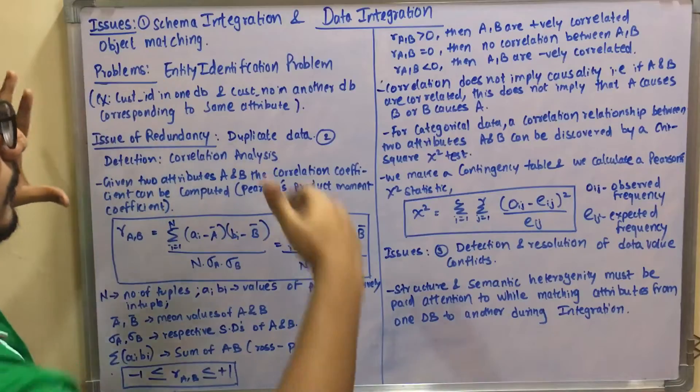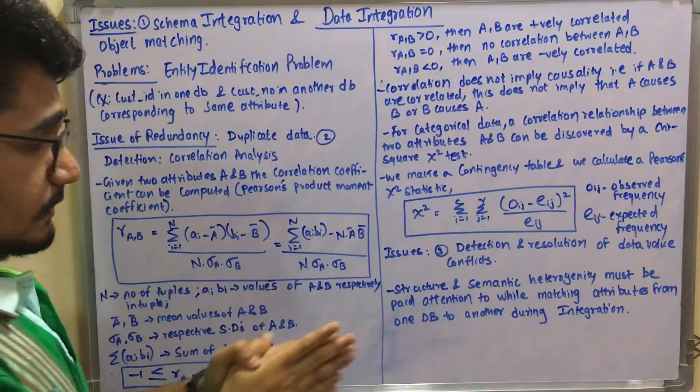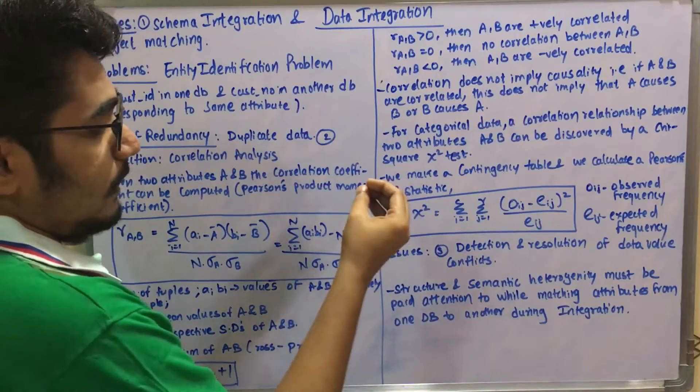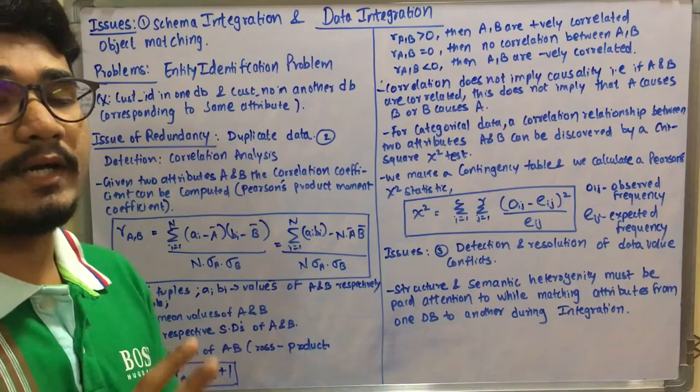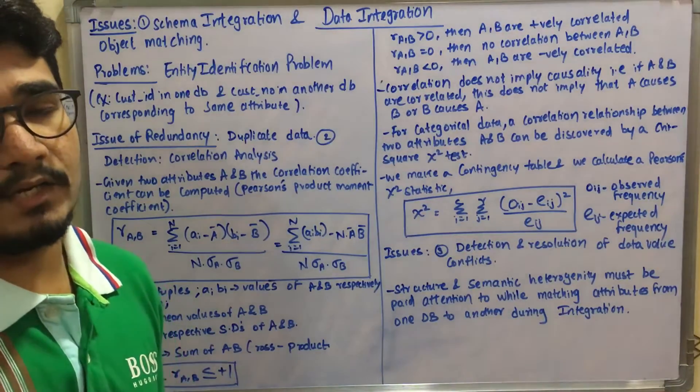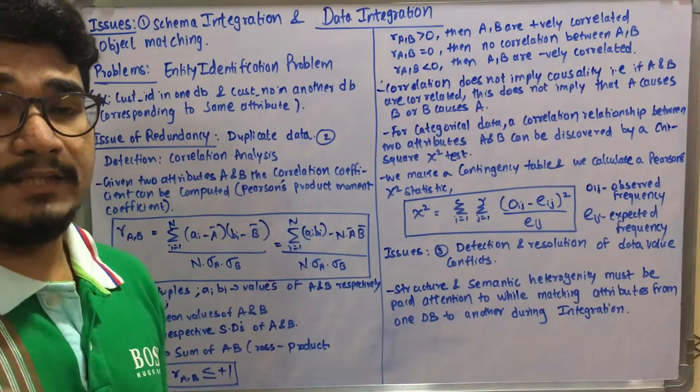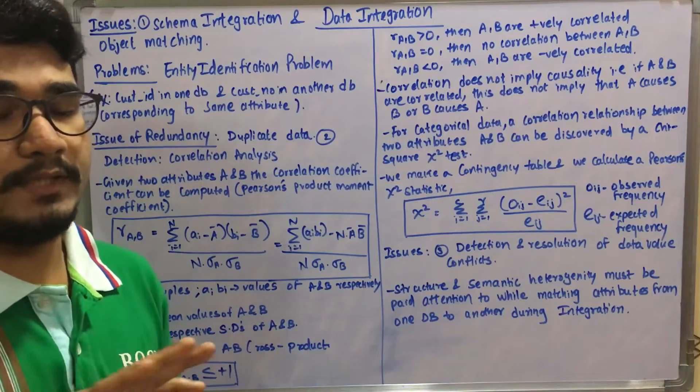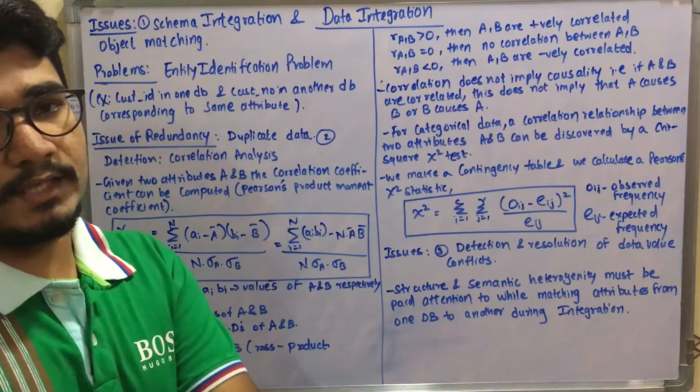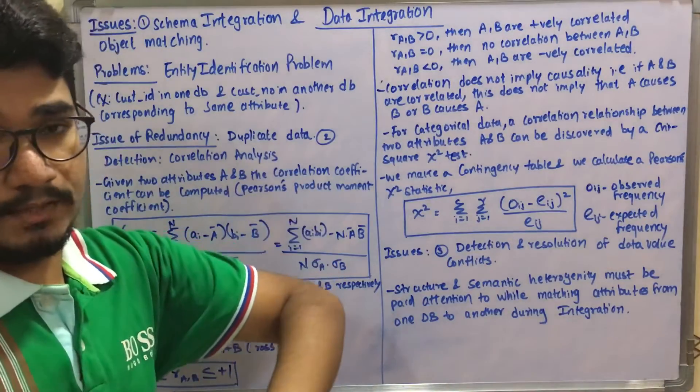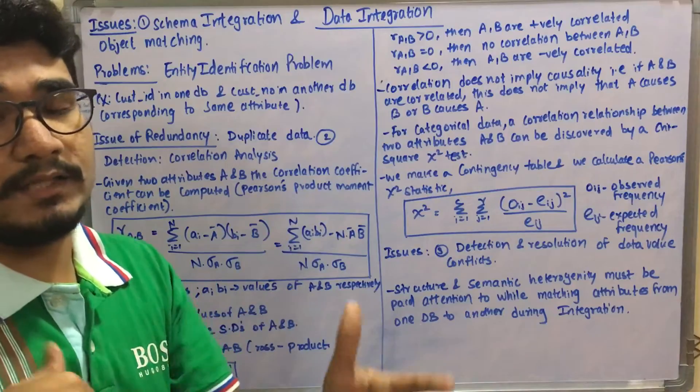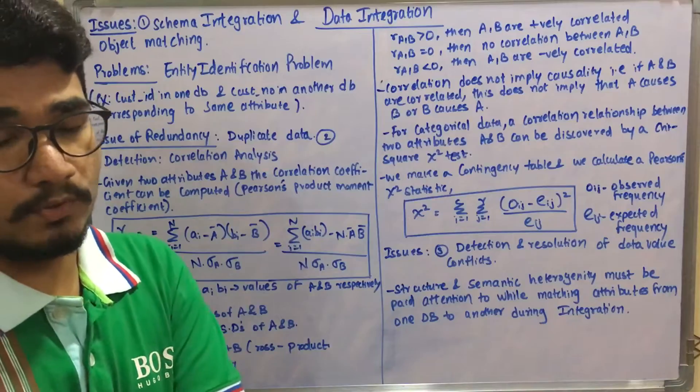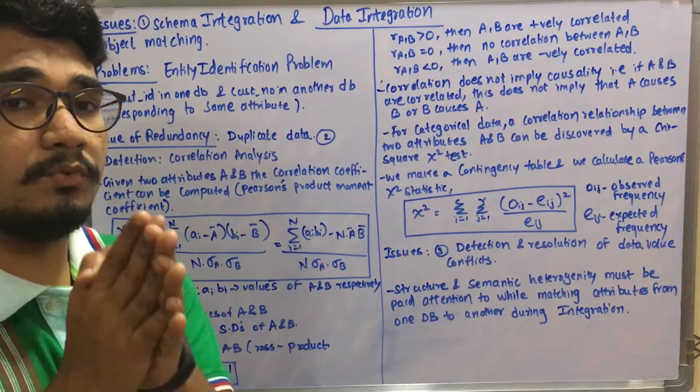We have issues of detection and resolution of data value conflicts. For example, consider a scenario where we have a tuple and we apply a discount meant for the supply at the end of purchased items. In another tuple it's discount on each of the items, so if you integrate and some matching goes wrong, that integrated data value may be wrong.